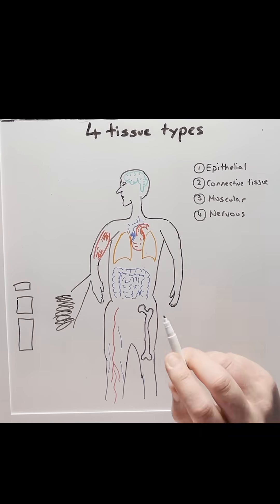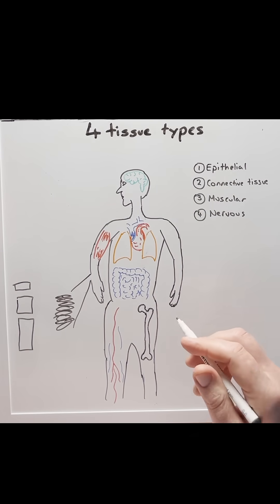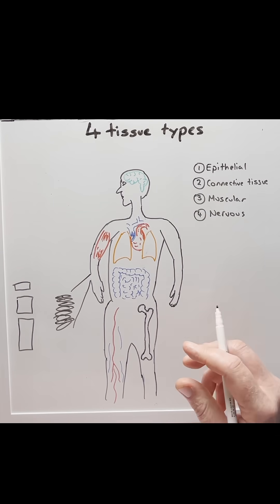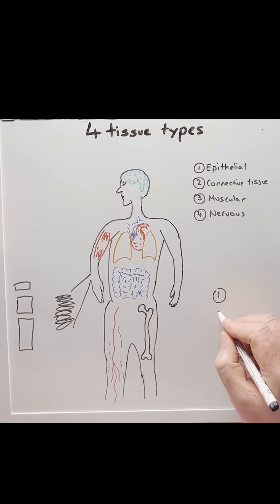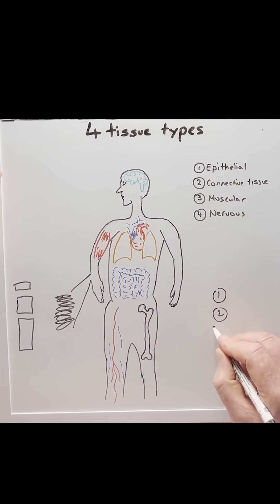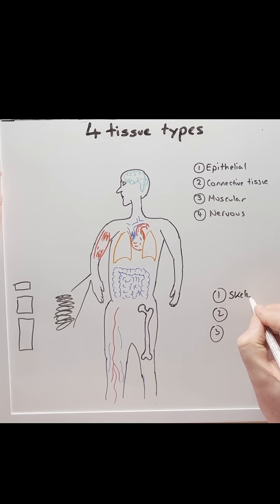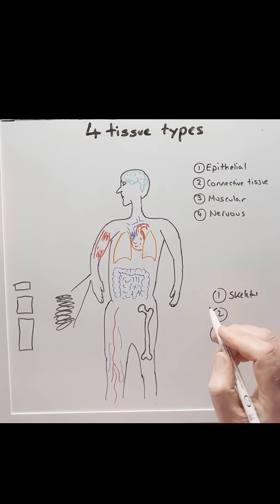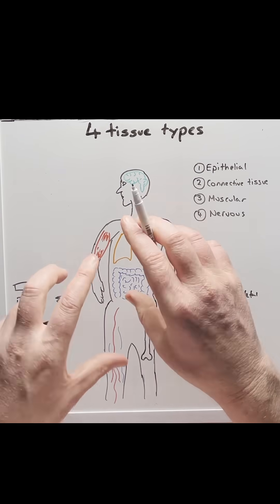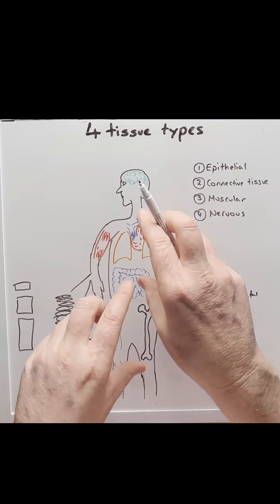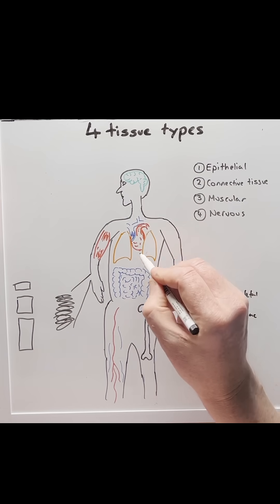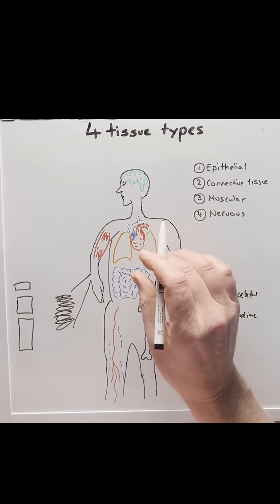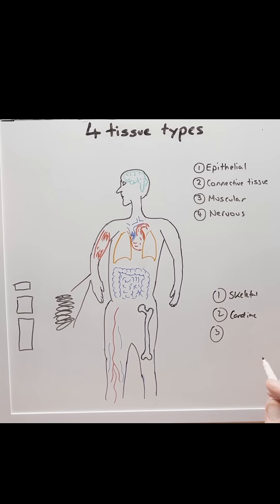Moving on to muscular tissue. Muscular tissue is made of myocytes that generate force, therefore movement. There are three types of muscular tissues. Number one is skeletal muscle, which attaches to bone, and when it contracts, it helps to move the skeleton and generates body movement. Number two is cardiac muscle, which is made up in the heart, and when it contracts, it pushes blood out of the heart.